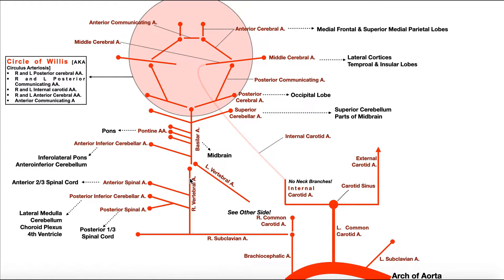The vertebral artery comes off the subclavian artery on both sides. The first branch off the vertebral artery is the PICA — the posterior inferior cerebellar artery. The structures it supplies are the lateral portions of the medulla, portions of the cerebellum, the choroid plexus, and the fourth ventricle.